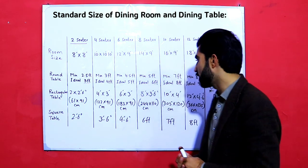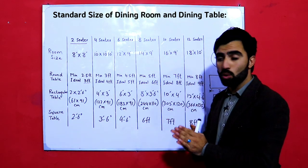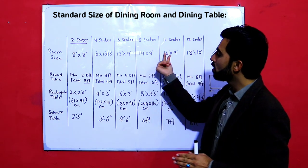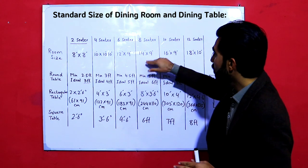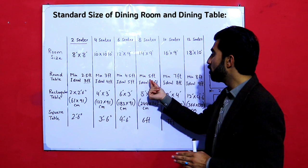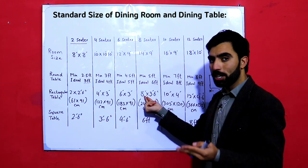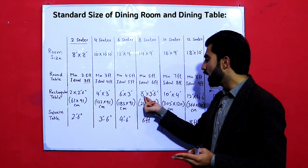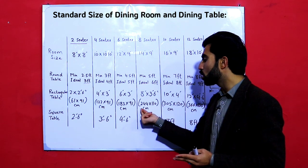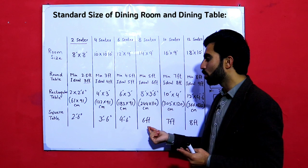For eight sitters, the dining room size should be fourteen by nine feet. The minimum round table should be five feet and the ideal is six feet. For a rectangular table, the size should be eight by three point five feet, or 244 by 110 centimeters. For a square table, six feet is the standard size.